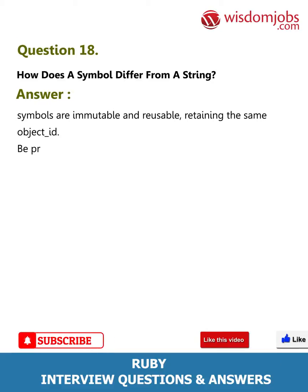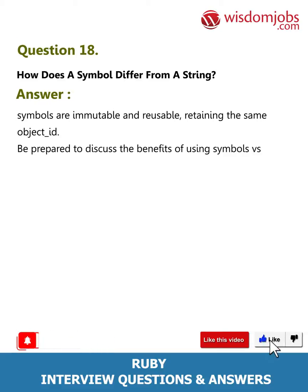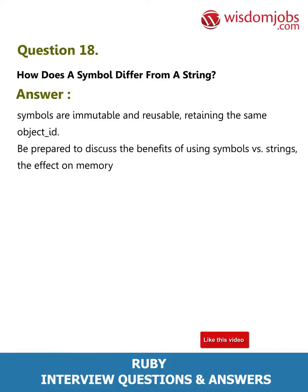Question 18: How does a symbol differ from a string? Answer: Symbols are immutable and reusable, retaining the same object ID. Be prepared to discuss the benefits of using symbols versus strings, the effect on memory usage, and in which situations you would use one over the other.